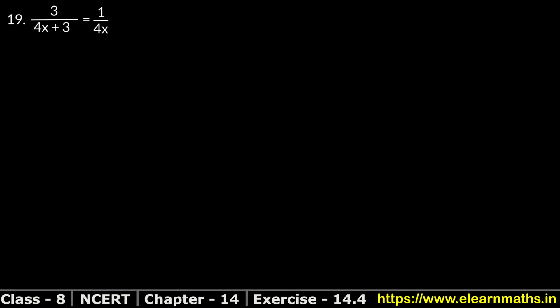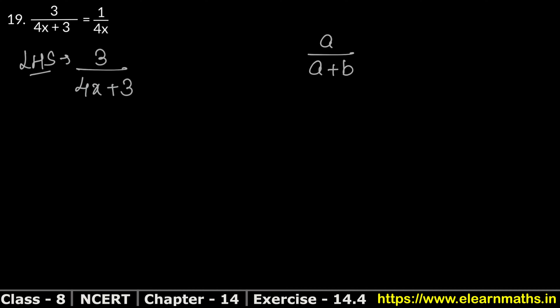Let's do question number 19. Question 19 is: 3 upon 4x plus 3 — does it equal 1 upon 4x or not? Left hand side is 3 upon 4x plus 3. As we saw in question 18, this is in the form b upon a plus b, and we cannot split b upon a plus b into separate terms either.